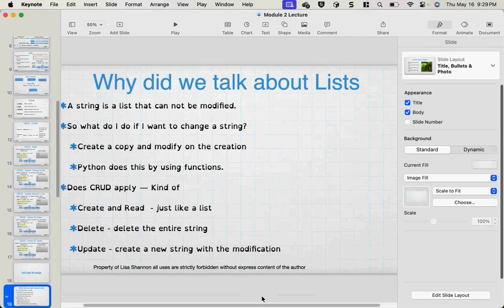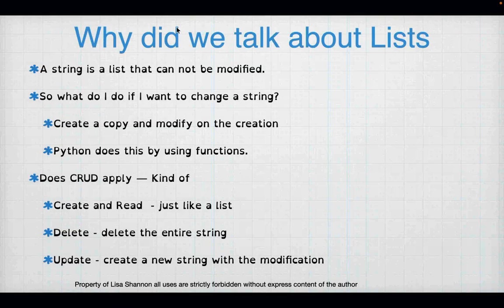Why don't we talk about strings more now that we know about lists? A string is a list that cannot be modified. If you want to change a string, you create a copy and modify it on creation. Python gives you functions to do that. CRUD still kind of applies — you can create, read, delete, and modify a string by creating a new string, which is the best we have for strings.